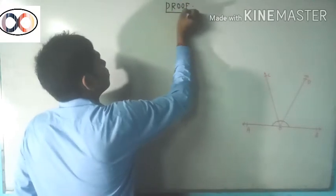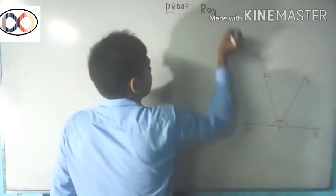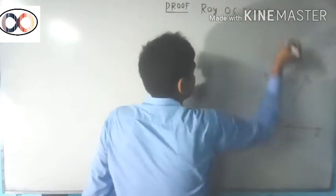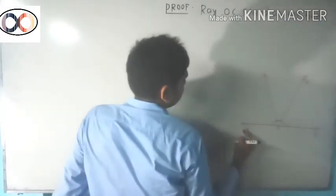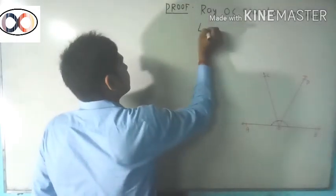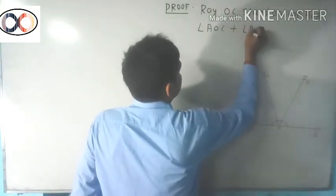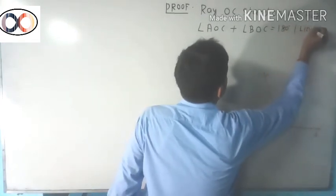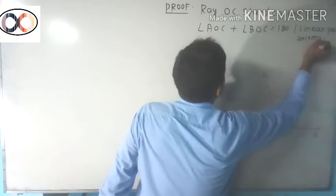Proof: Ray OC stands on line AOB. Therefore we can write angle AOC plus angle BOC equals 180 degrees, from the linear pair axiom.